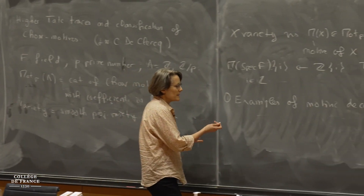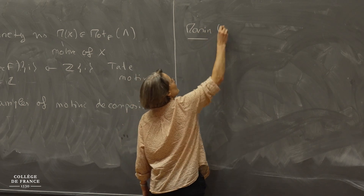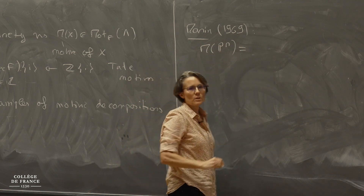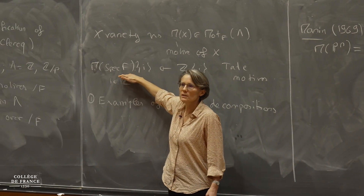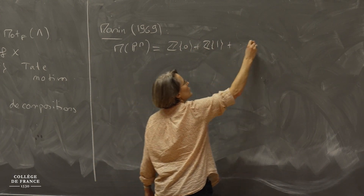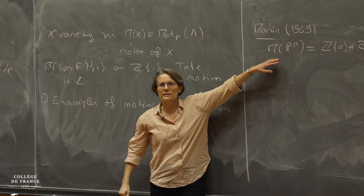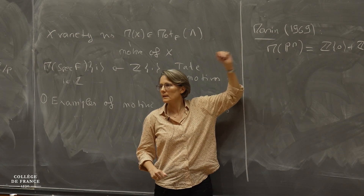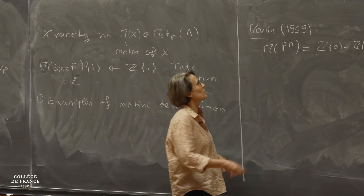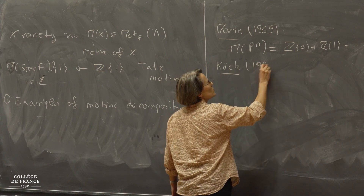To show some very explicit examples: the first one is already in Manin's paper from 1969. Manin explains that the motive of P^n is very easy to describe — it's a sum of shifts of the motive of a point, so with our notation it's Z(0) plus Z(1) plus etc. plus Z(n). This reflects the fact that this variety has a cellular structure. Because of that, the same kind of result holds for any split projective homogeneous variety, as shown in a paper of Köck from 1991.